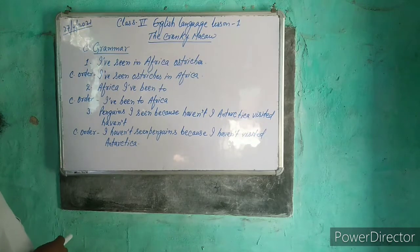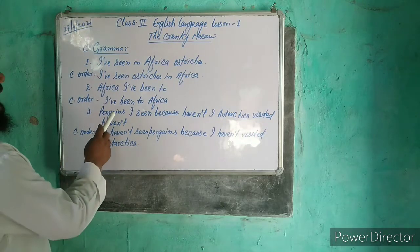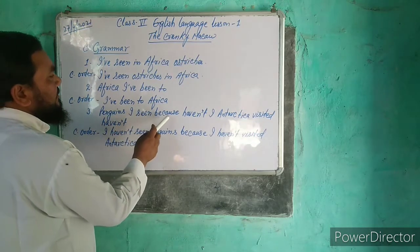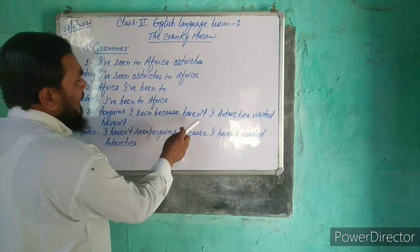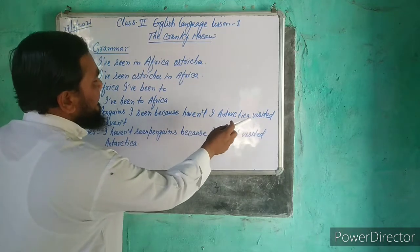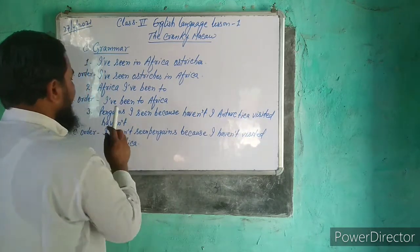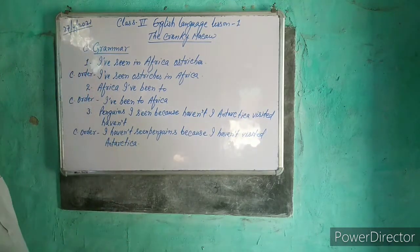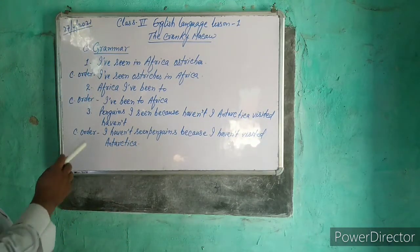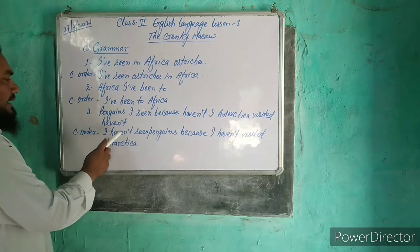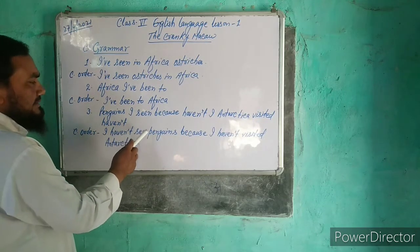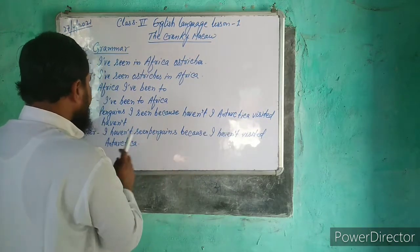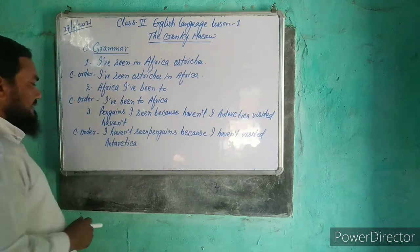Now the third sentence: penguins I have seen because I have not visited Antarctica. It is not in correct order. The correct order is: I have not seen penguins because I have not visited Antarctica.